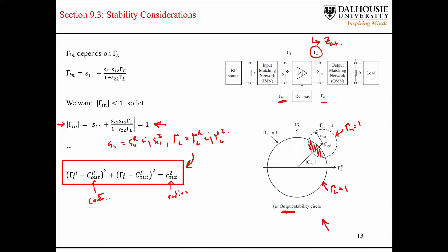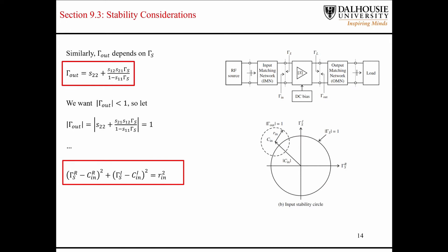Chapter nine relies heavily upon this concept, so if it's not clear right now it will be by the time we're through. You could go through and do the same derivations for the output side — it's just the mirror image of everything we just went through. You end up with an output reflection coefficient that depends on how the source is matched. If you limit the magnitude of that output reflection coefficient, meaning you don't want any return waves on the output side increasing in magnitude — potential positive feedback leading to stability problems.